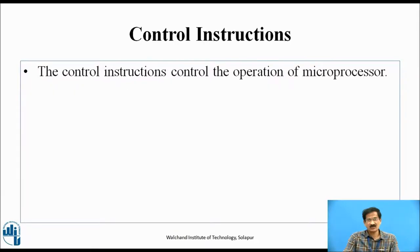Control instructions control the operation of the microprocessor. When the program counter fetches the instruction from the memory location to the instruction register, the instruction decoder performs the decoding process.